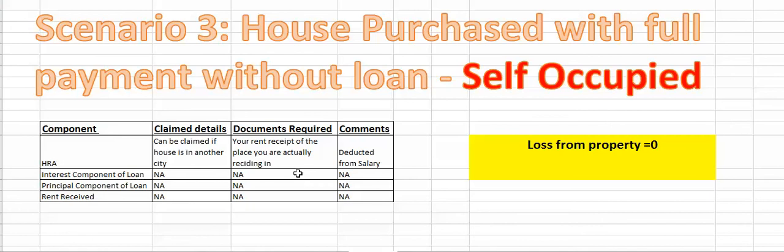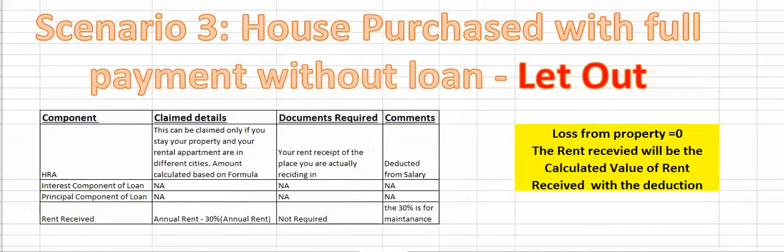The next scenario is if you have no loan. In this case, you can still claim HRA if you are living in a different city; otherwise there is no tax advantage. And if you have let out the property, then the annual rent received minus 30% of that amount is what you will put in as rental income.